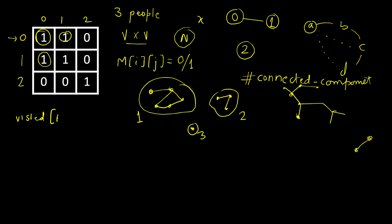You can use a separate visited array of length N, initially marked as false, and mark nodes as true when visited. But we don't need that extra space — we can modify the matrix itself. Since the diagonals are initially all 1, that means all nodes are unvisited. Whenever we visit any node, we mark that diagonal entry as 0.